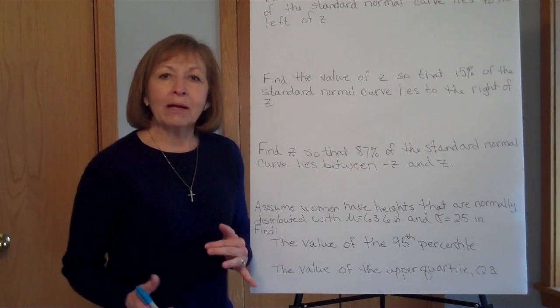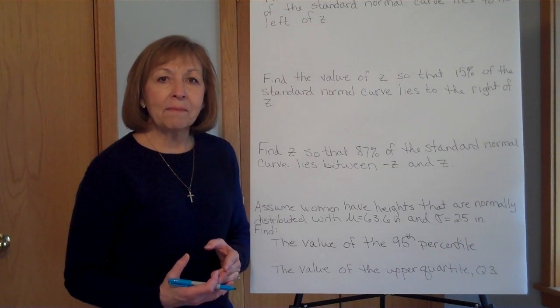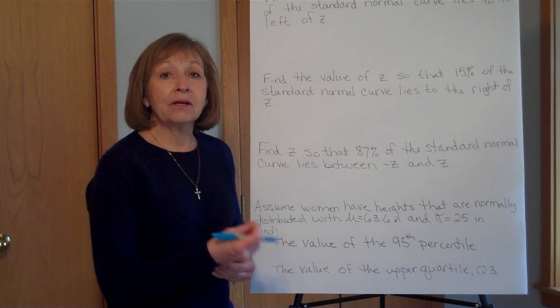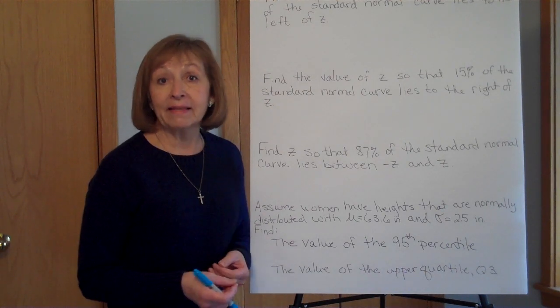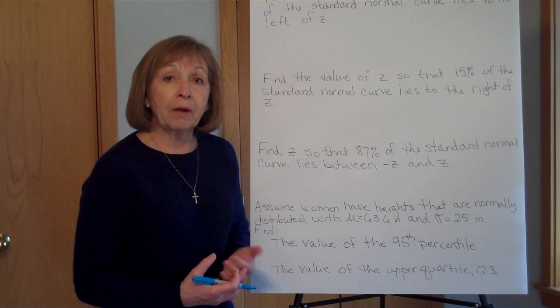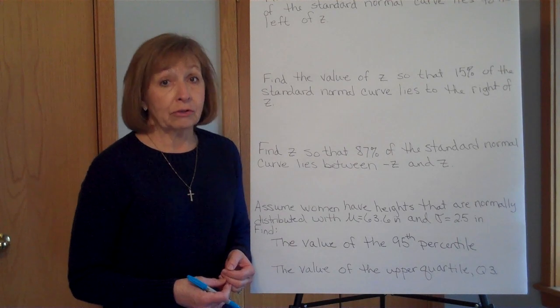Well, we're going backwards on the process that we did before, and when you're going backwards on a process in mathematics, we call that the inverse. So when we have the probability or when we have the area and we want to find the z-score or the raw score for a normal probability distribution, we're going to use the inverse norm.